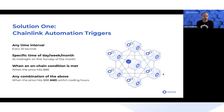Or it can be an on-chain condition like has a price reached a certain threshold, or does a custom function in a contract return a particular value, or something more complex like a combination of multiple factors.